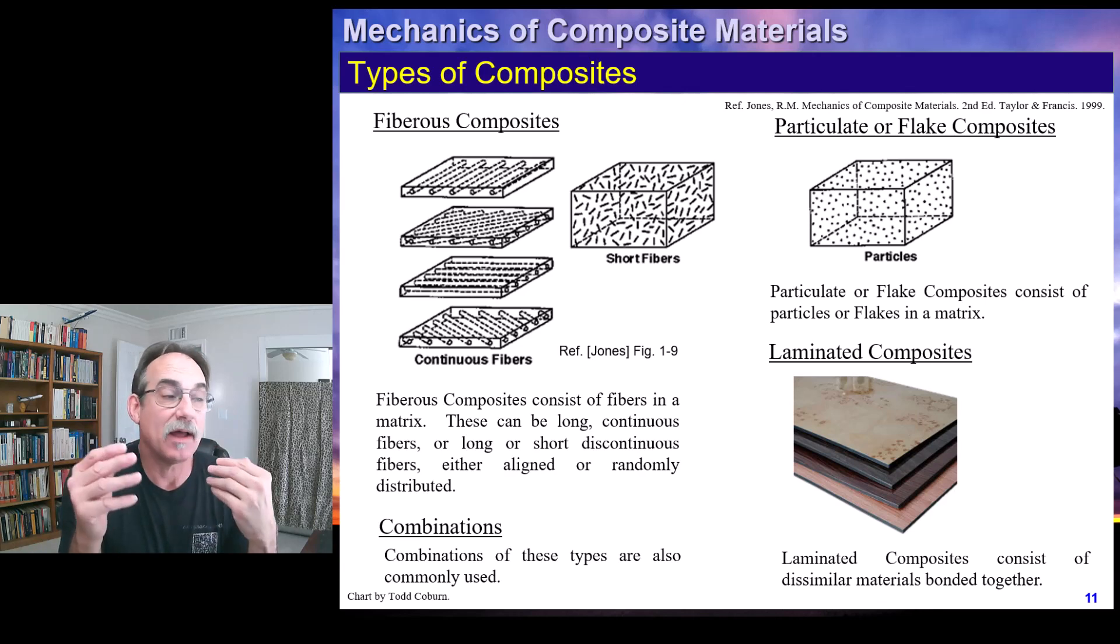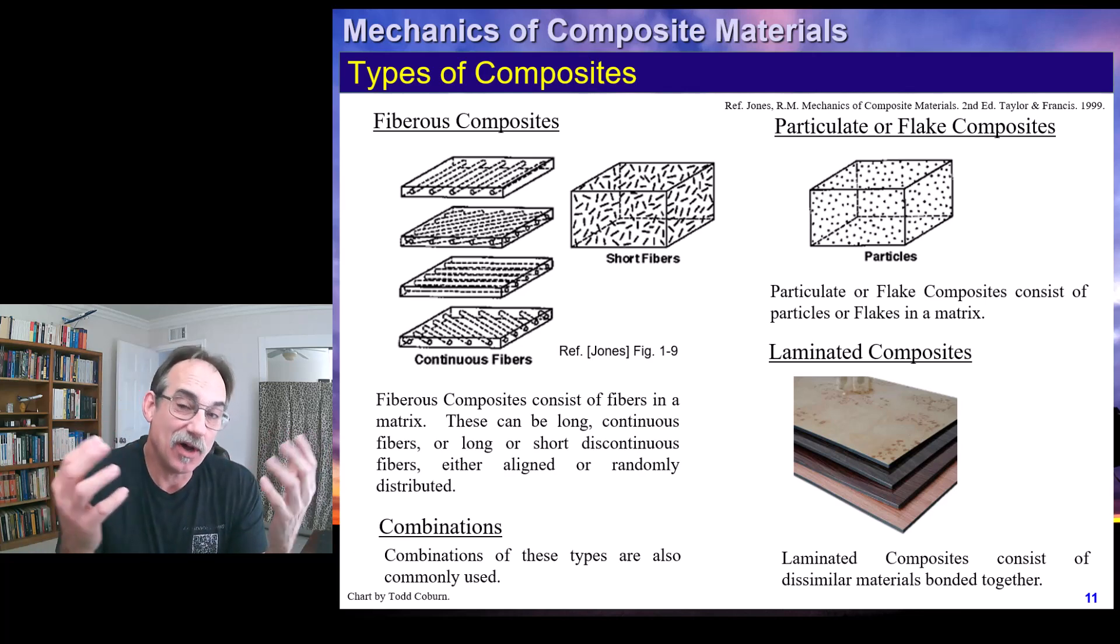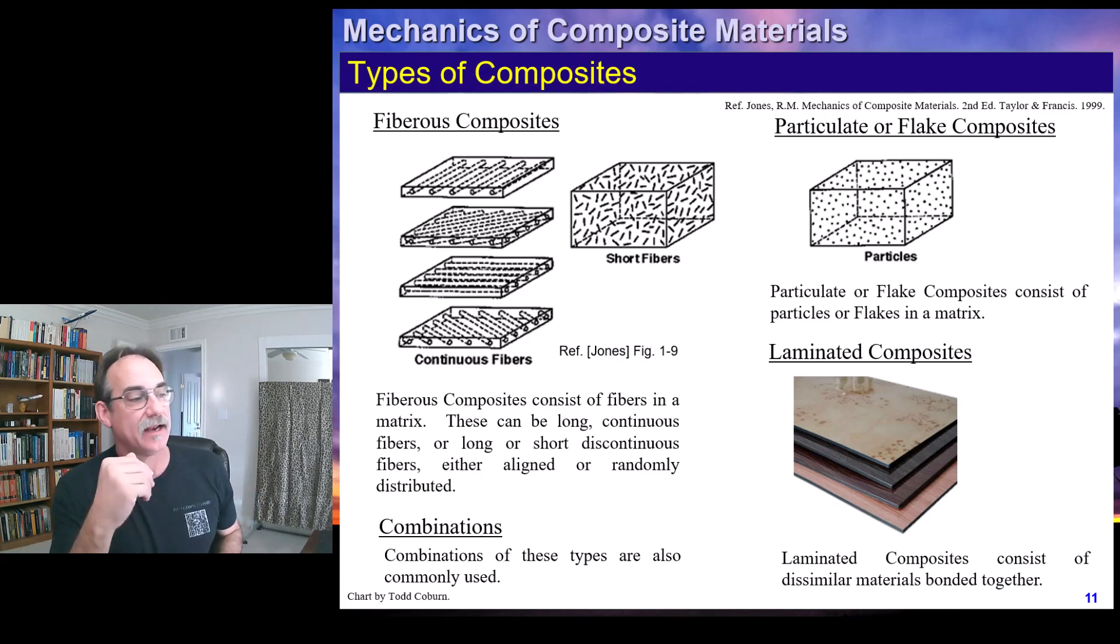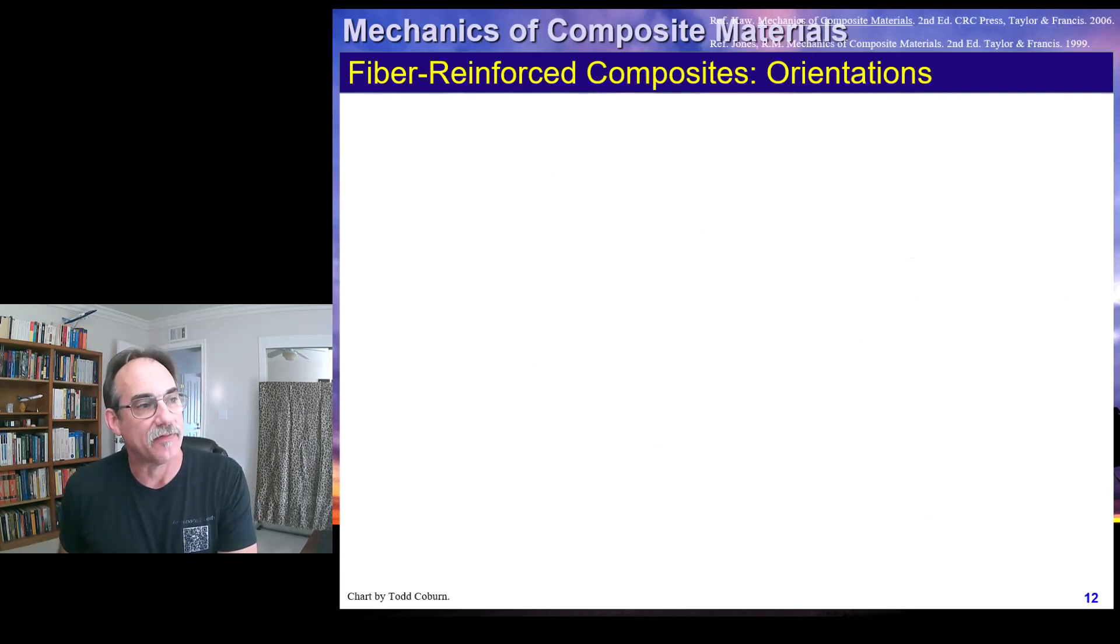The short fiber thing, we already talked about that. Those can be in the particles that you see here, could be actually distributed so they act like a pseudo-isotropic material, which means we can use our old methods. And laminated composites, we already talked about that.